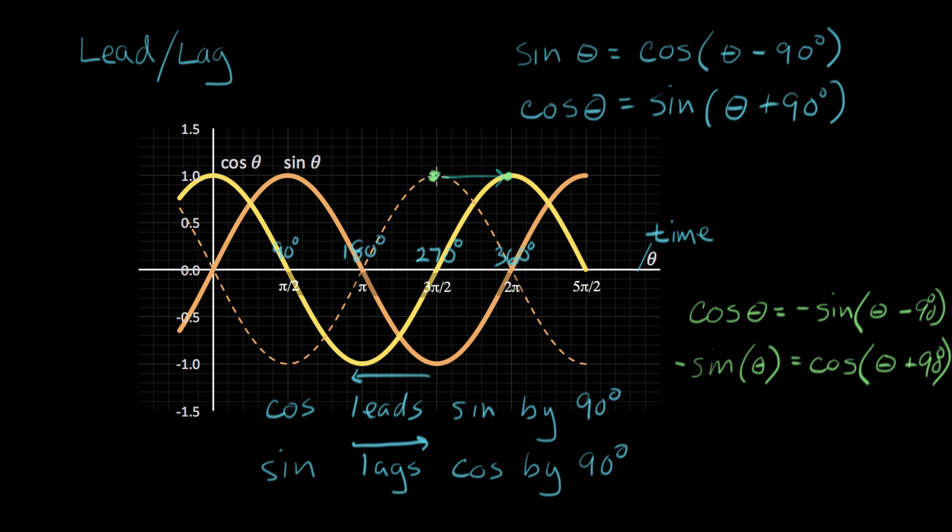So this identity and this identity are pretty useful to have around. This one allows us to convert sines and cosines together. This pair here is useful for moving minus signs around.